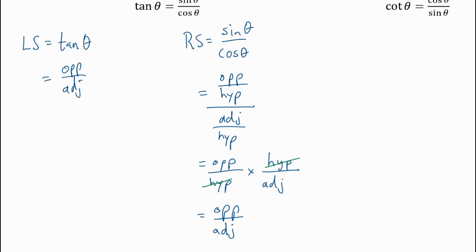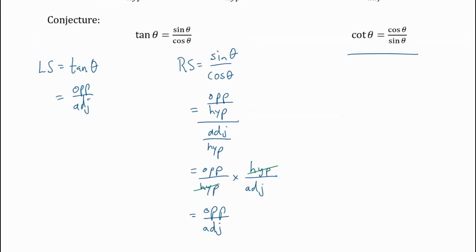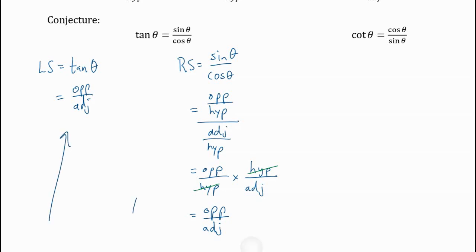Using SOH-CAH-TOA, we're able to prove that this identity is true: tan equals sine theta over cos theta. The proof for cotangent is similar — you could use the reciprocal ratios for cosine and sine and do the same thing. You can also take by definition that cotangent is the reciprocal of tangent, which is one of the facts we're going to use.